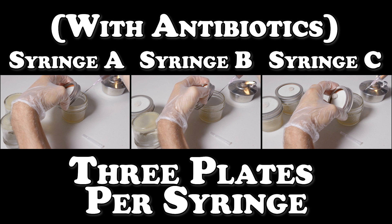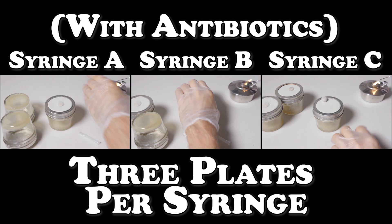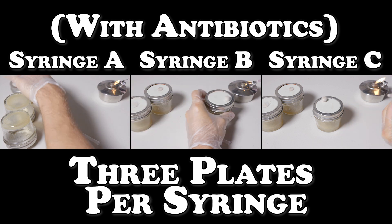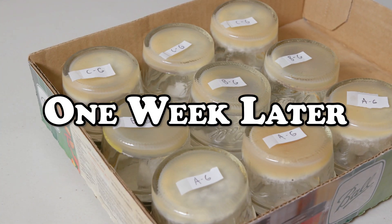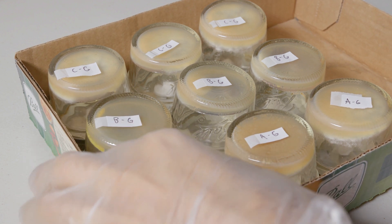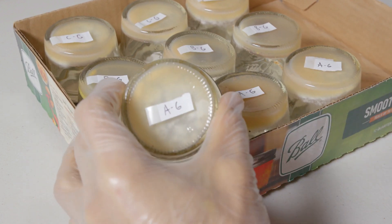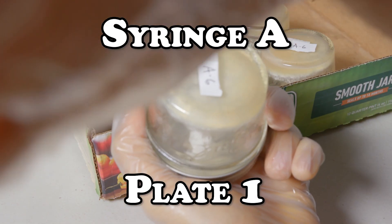As with the regular agar, syringe A, B, and C will each get three antibiotic plates. We will quickly run through each set and see how much difference this simple solution really does make and see firsthand why our antibiotic spawn bags worked so well. Here we are one week after inoculating our antibiotic plates. Notice how I've labeled these plates with a G to denote the gentamicin used in the recipe.